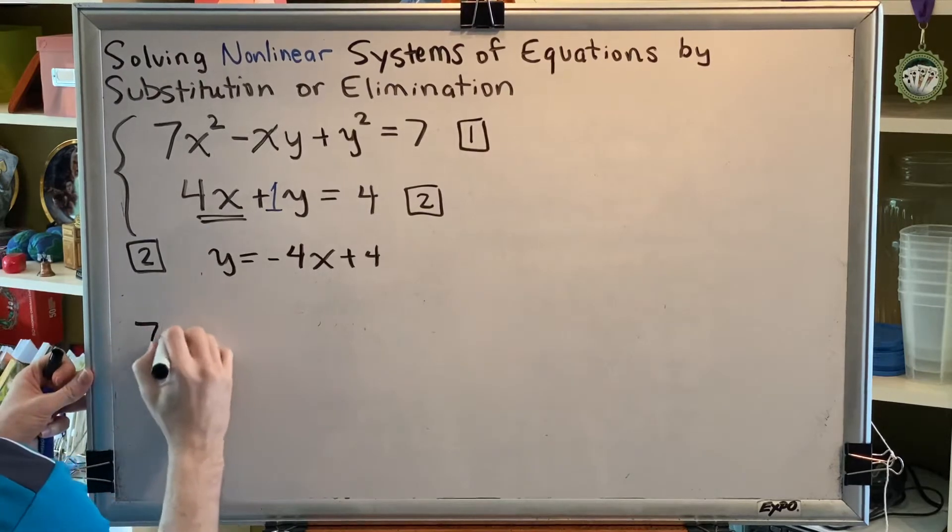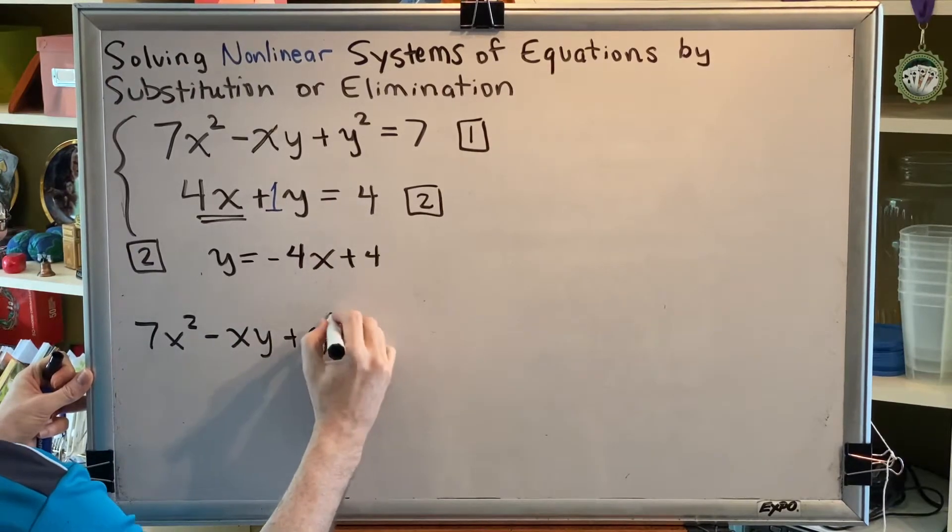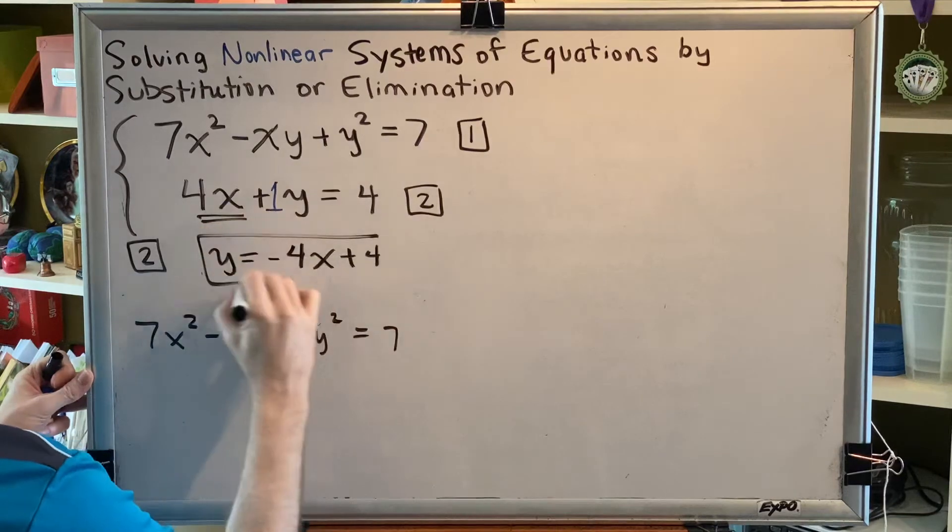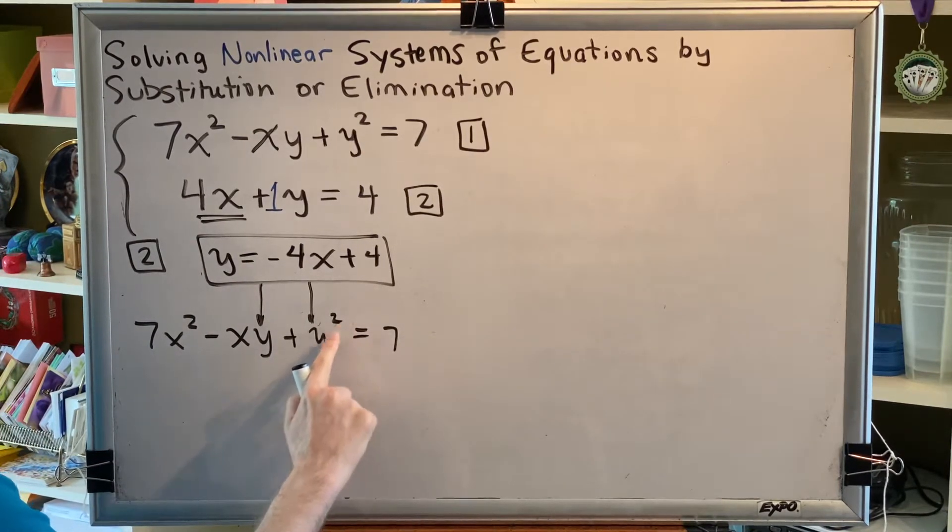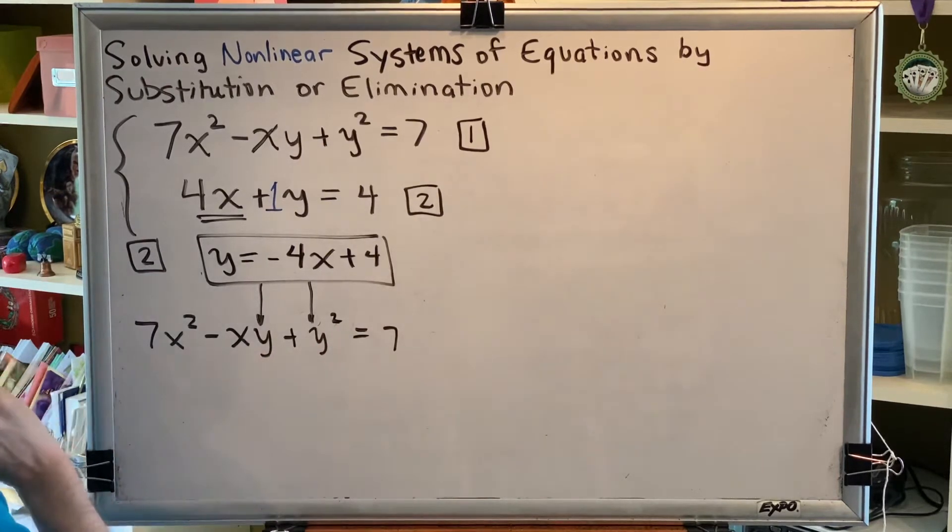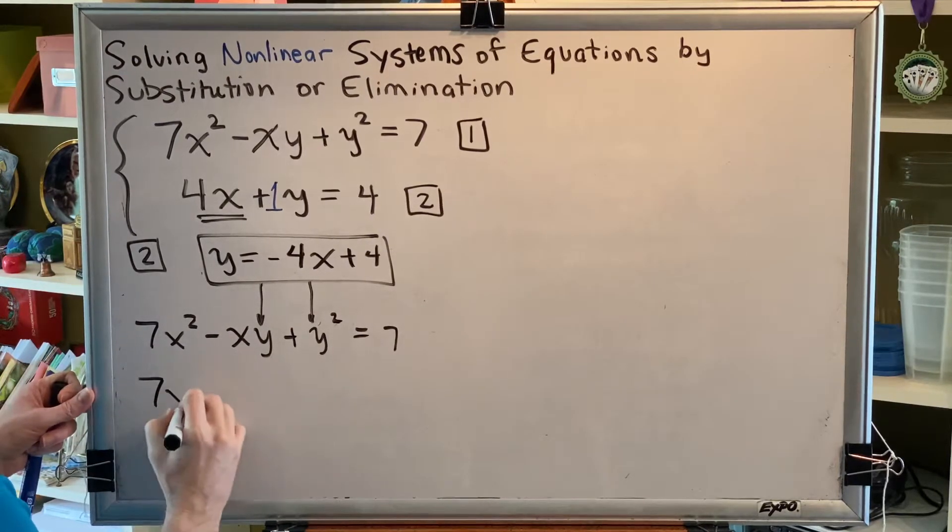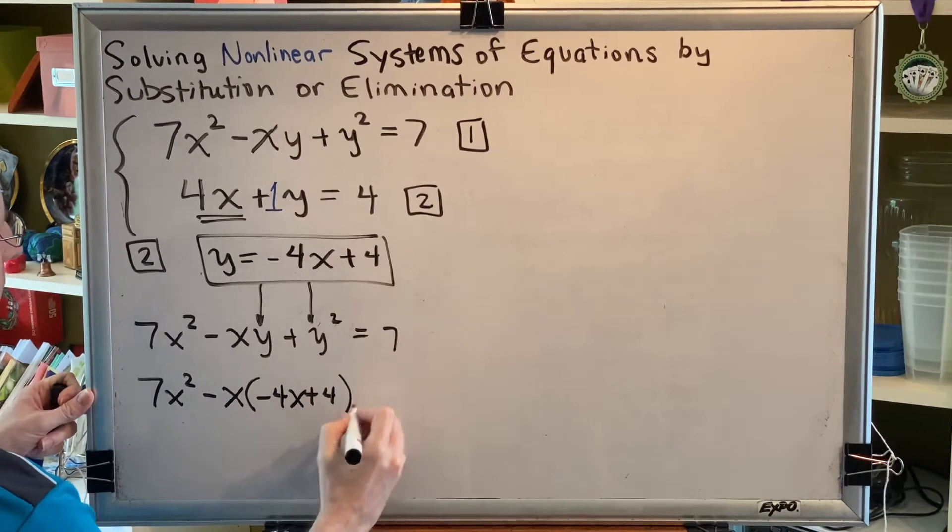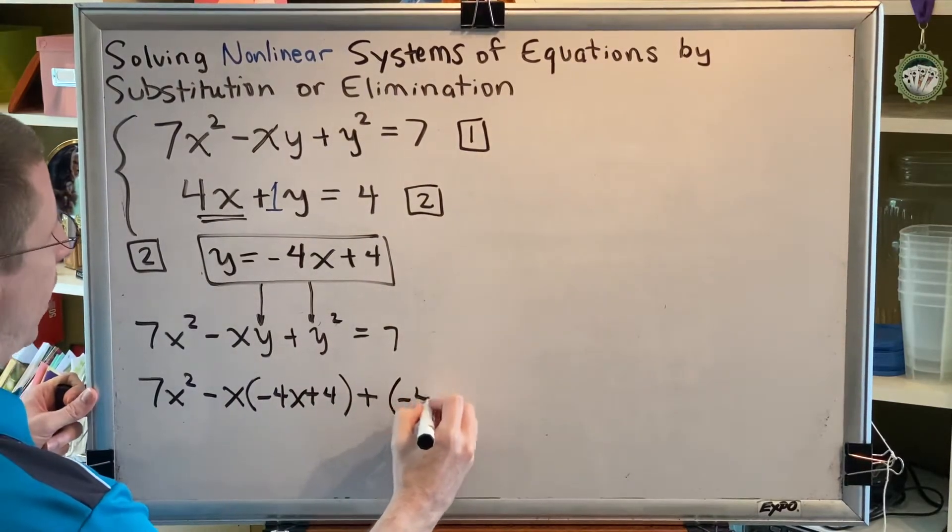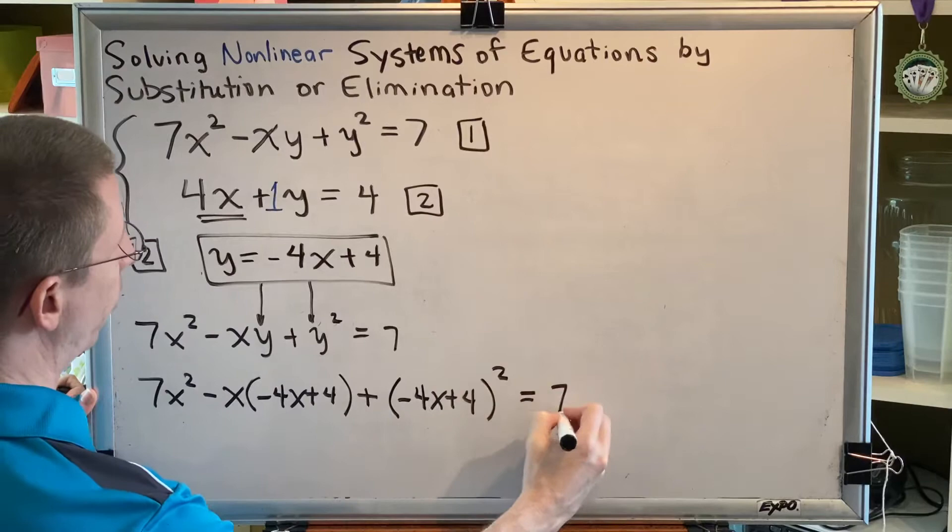Now we can substitute that into equation 1. Everywhere we see a y in equation 1, we're going to put negative 4x plus 4 instead. So that means we're actually going to substitute twice, once here and once here. And whenever you replace something with something new in algebra, remember that if it has an exponent, or if it has a multiplying neighbor, or if it is being subtracted, then you must put the new thing in parentheses. So we get 7x squared minus x, parenthesis, negative 4x plus 4, close parenthesis, plus, parenthesis, negative 4x plus 4, close parenthesis, squared, equals 7.